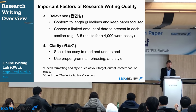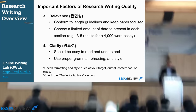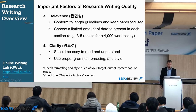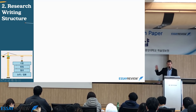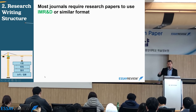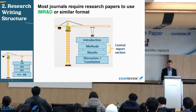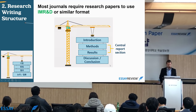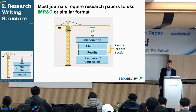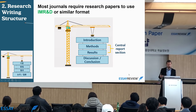Now that we've discussed that, let's talk about research writing structure. Basically, there are four main parts in most research papers: introduction, methods, results, and discussion — sometimes with a concluding paragraph. They're usually in this order. You've probably seen this structure before, but maybe you haven't learned exactly what to do with each part.